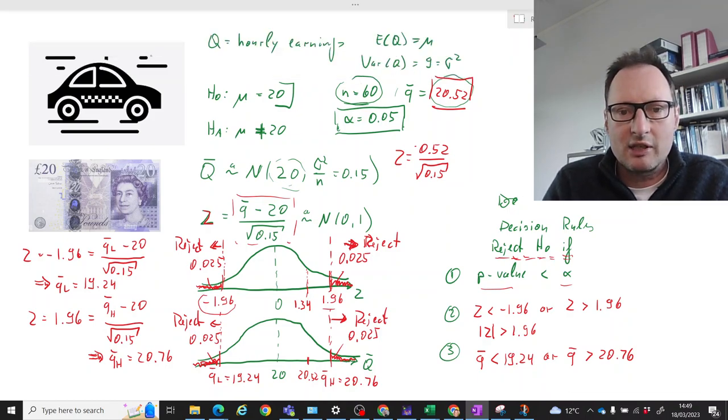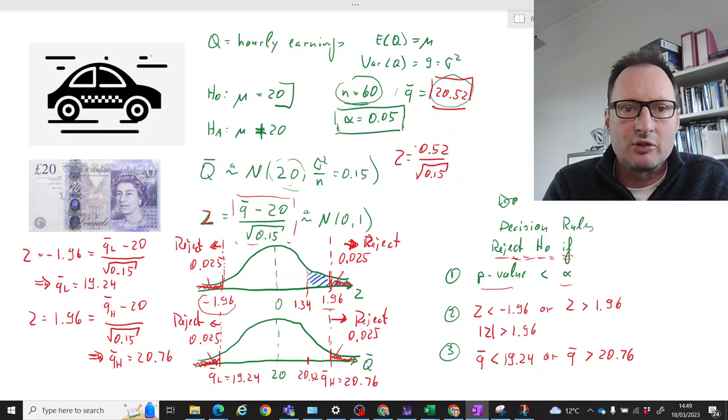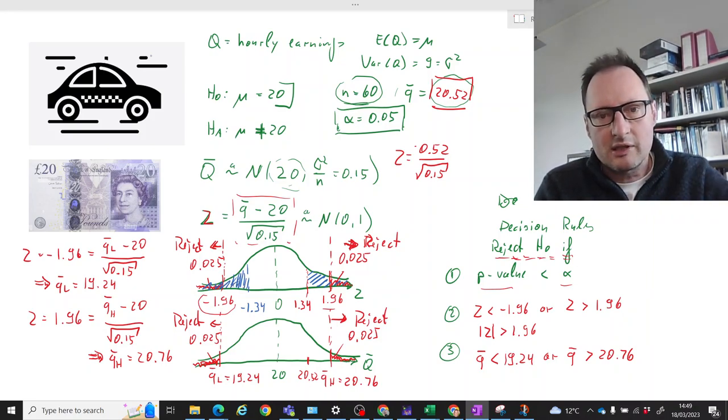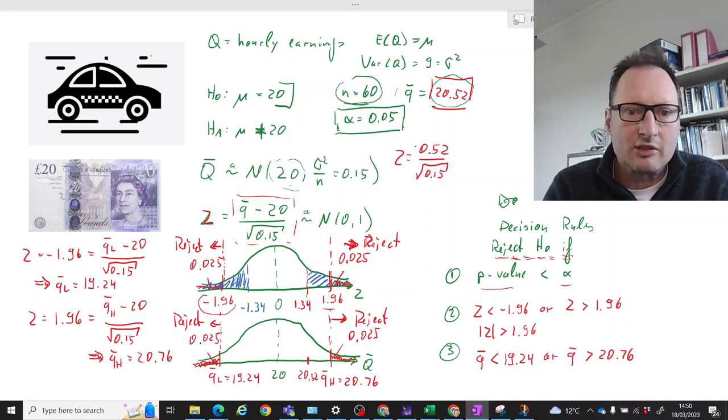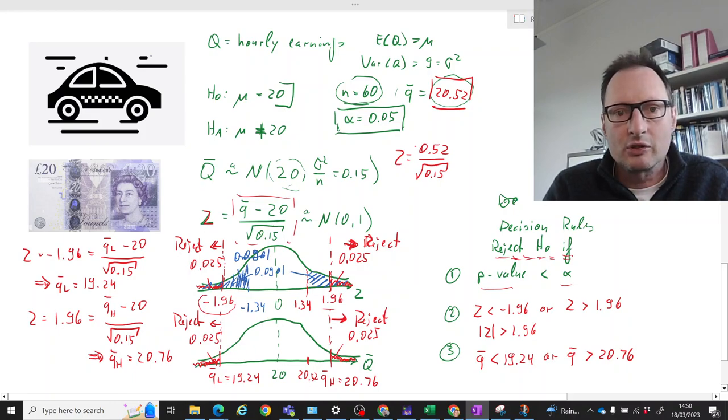The p-value of this test statistic is going to be the size of this area, but since we are dealing with a two-tailed test, we would have to add the size of this area. You can go to your table and figure out what the size of that area is. So at negative 1.34, I read that off the table and see it's 0.0901. And this size will also be 0.0901.